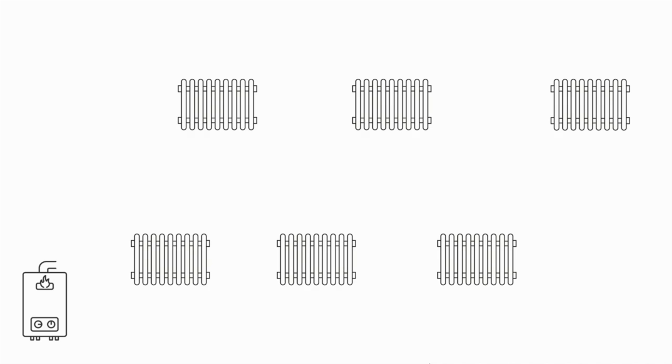What that all amounts to is that no two radiators are the same in terms of their resistance to flow. What you tend to find is that the radiators closest to the boiler tend to have less resistance to flow than ones further away, and balancing looks to even this out across the whole of the system.